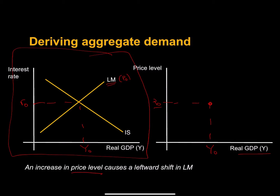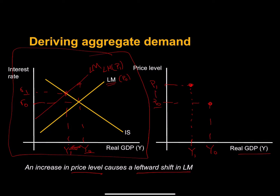An increase in the price level causes a leftward shift in the LM curve. So if we have a higher price level, let's say here at P1, we're going to have a different LM curve that, all else held constant, is associated with a higher rate of interest. Here is our new LM curve, and our equilibrium real GDP is lower than Y0. We don't see the real interest rate in our aggregate demand framework directly — it's indirectly suggested: as price level rises, the real interest rate also rises.